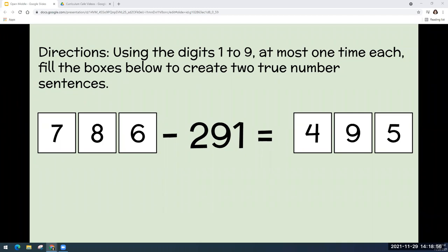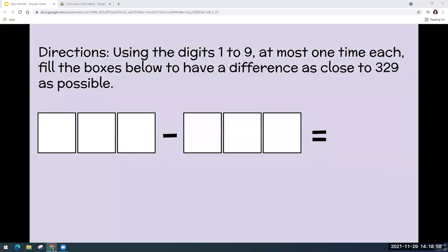Let's do one more problem. This time we're still using the digits one through nine. But this time we need to fill the boxes so that the difference is as close to 329 as possible. So again, go ahead and pause the video while you work on this problem. And then once you're ready to move on, go ahead and press play.